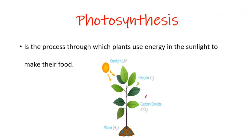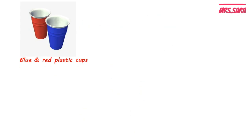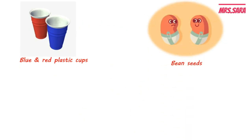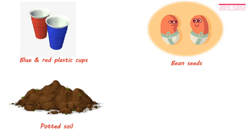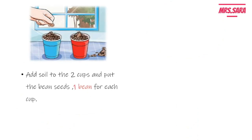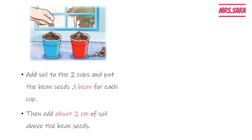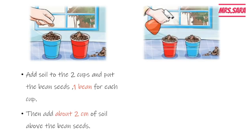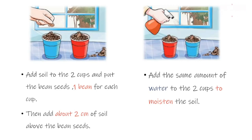To prove that sunlight is important, we will do an experiment using two different plastic cups — blue and red colors — with bean seeds put in soil and water. First, add some soil to the two cups, then put one bean seed in each cup, then add about two centimeters of soil above the bean seeds.